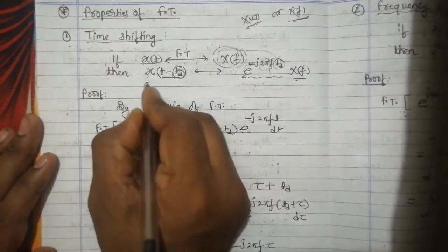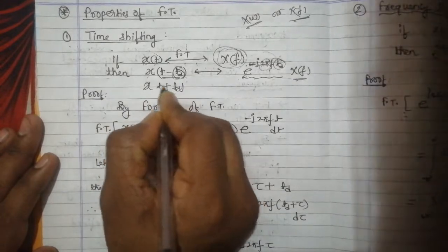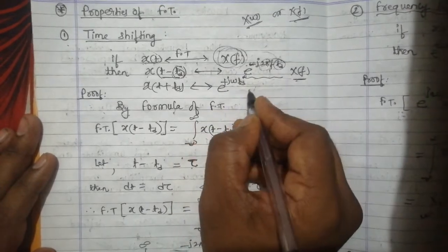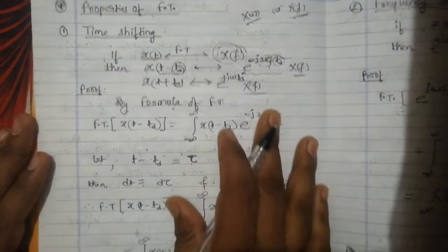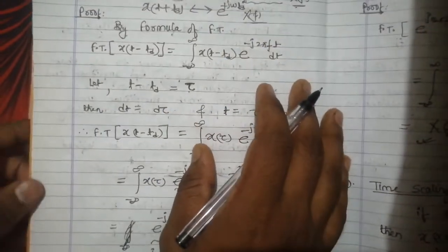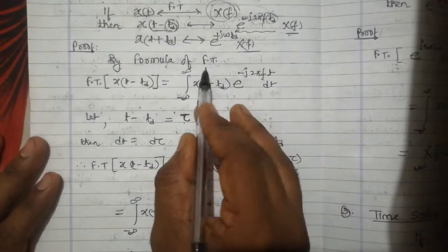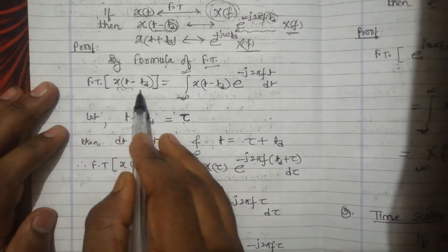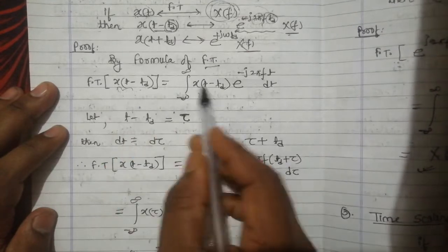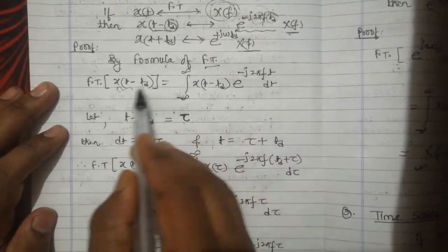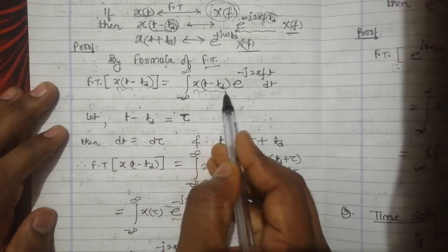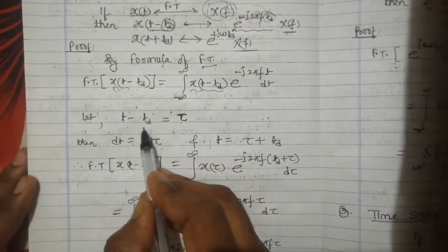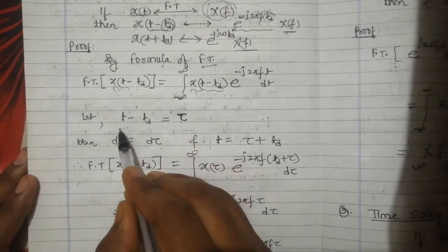And if x of t plus t_d is taken instead, then the result would have plus j omega t_d, meaning e raised to power plus j omega t_d times X of f. Now let us see the proof of this particular property. By applying the formula of Fourier Transform directly to the signal x of t minus t_d, we know the formula involves integration where at the place of x of t we now have x of t minus t_d.